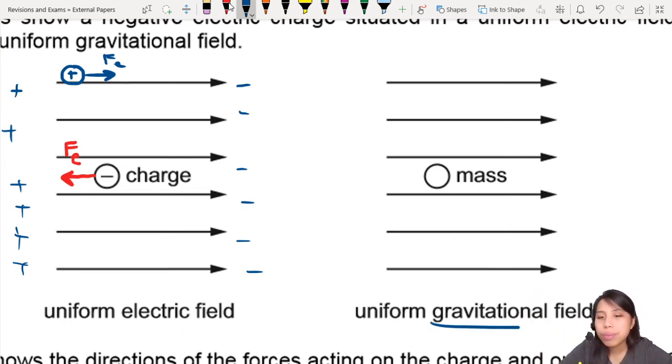Next one, gravitational field. Not so complicated. Mass is very obedient. Wherever the field point, there is where the force will be. So for this object, it's going to point this way. So this is our gravitational force pointing to the right.